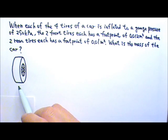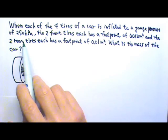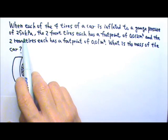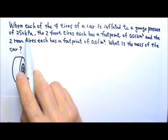I'm using one tire here to represent all four tires. The gauge pressure inside the tires is 250 kilopascals. This means the pressure inside the tires is 250,000 pascals higher than the atmospheric pressure.